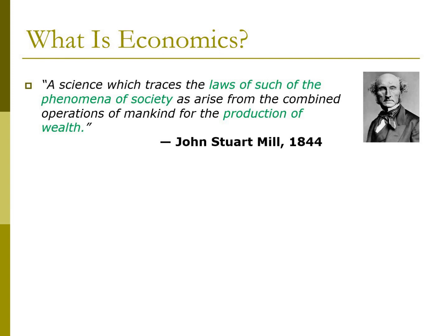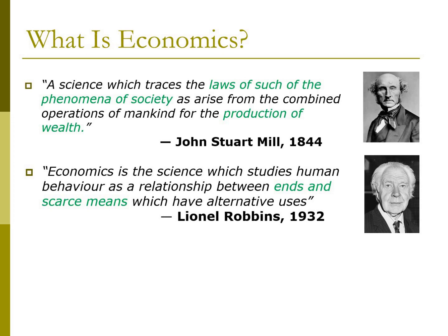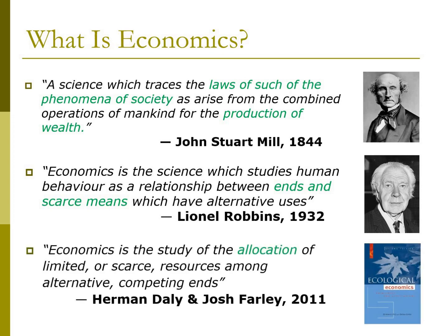If we fast forward to the 20th century, another shift has taken place. One of the most famous definitions of economics was given by Lionel Robbins. And if you open a modern economics textbook, you'll find a definition very much like this one: economics is the science which studies human behavior as a relationship between ends and scarce means which have alternative uses. There is no longer a specific goal, like there was for Smith — there are multiple ends and limited resources to satisfy them all. You'll also find a very similar definition in the most influential textbook on ecological economics by Herman Daly and Josh Farley, who write that economics is the study of the allocation of limited or scarce resources among alternative competing ends. So mainstream economics is the study of allocation — of how we decide where the resources of society go.